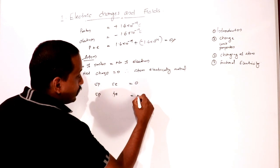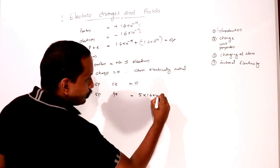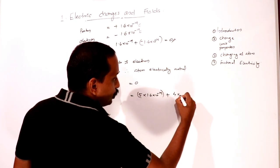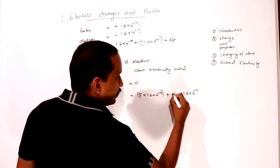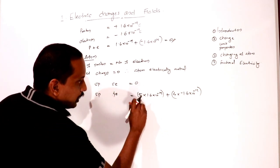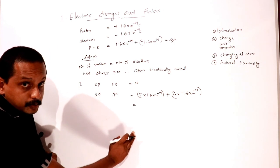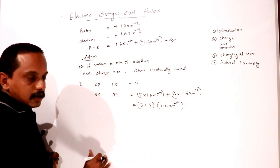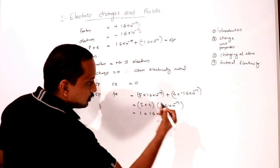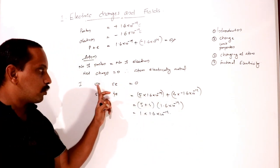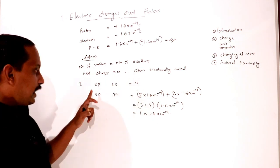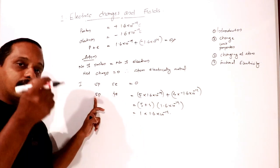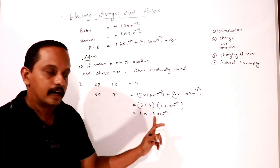The 5 protons contribute 5 × 1.6 × 10⁻¹⁹ C, and the 4 electrons contribute 4 × (−1.6 × 10⁻¹⁹) C. If there is an additional proton, the charge of the atom becomes positive.